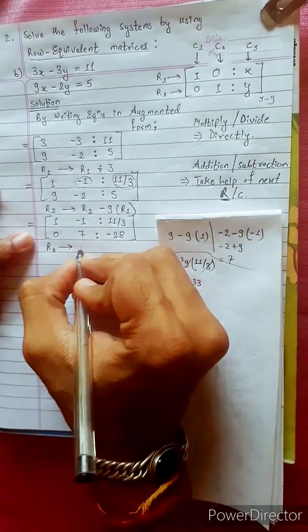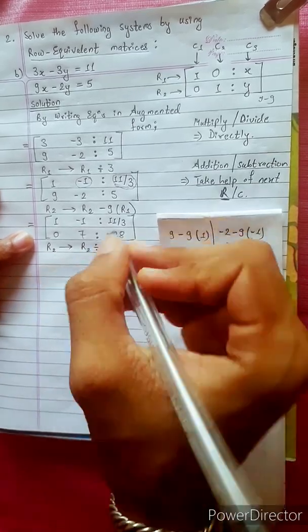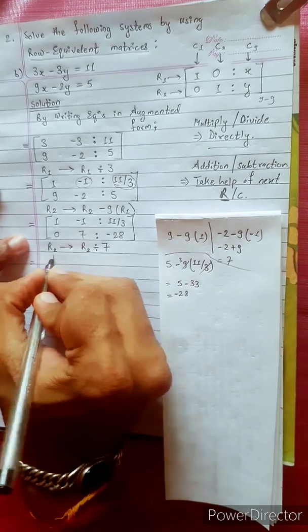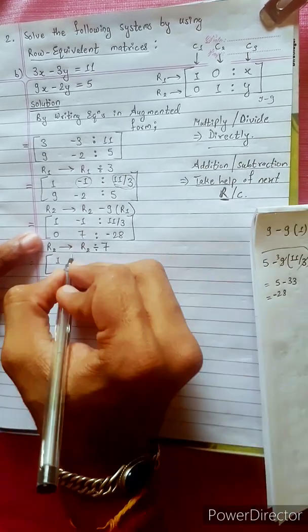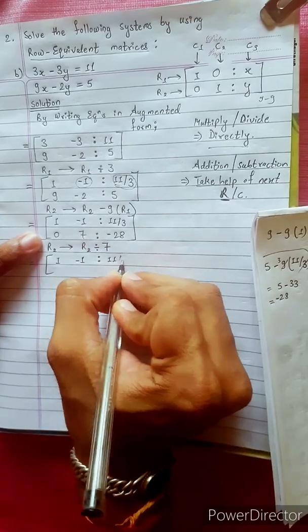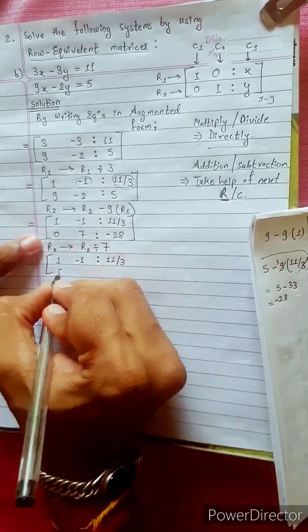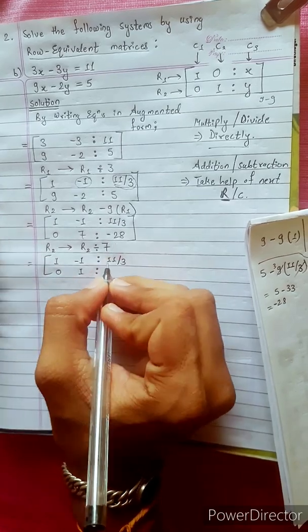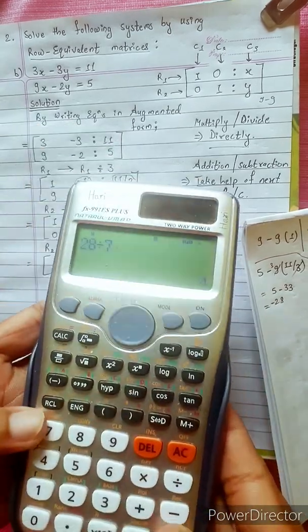R2 divides by 7. R1 remains: 1, minus 1, 11 by 3. For R2: 0 divided by 7 is 0, 7 divided by 7 is 1, and 28 divided by 7 is 4.